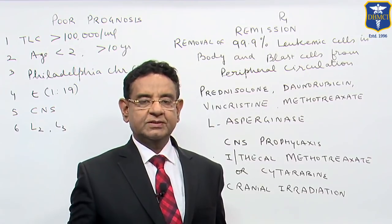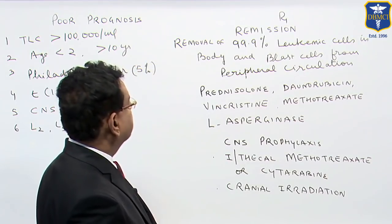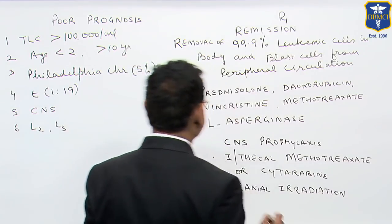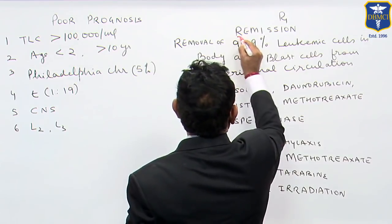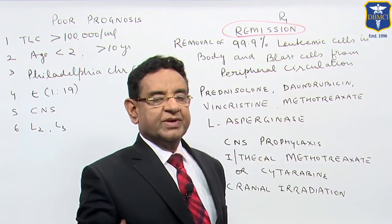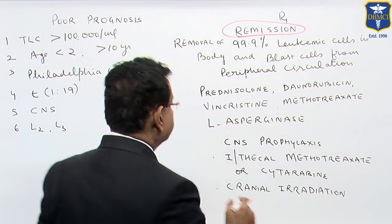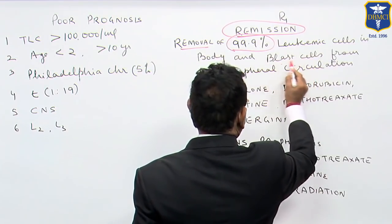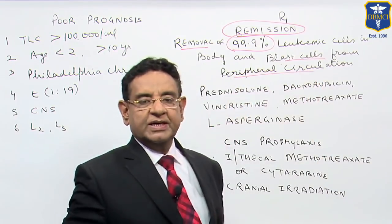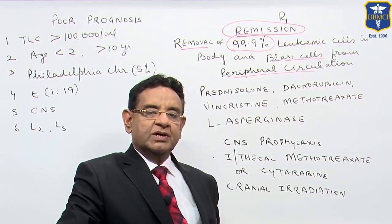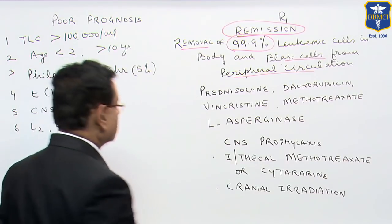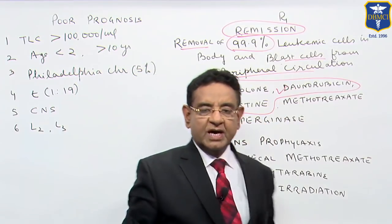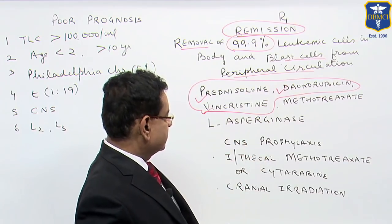Once we have diagnosed the case, how do we treat? Chemotherapy is the answer for ALL treatment. We give drugs for remission. Remission means removal of 99.9% of leukemic cells in the body and removal of blast cells from the peripheral circulation. Commonly used drugs are prednisolone, daunorubicin, or vincristine. Other drugs we can use are methotrexate or L-asparaginase.